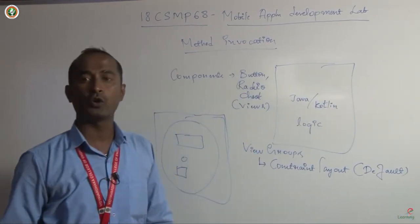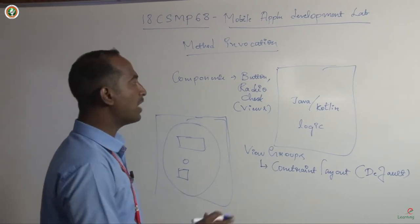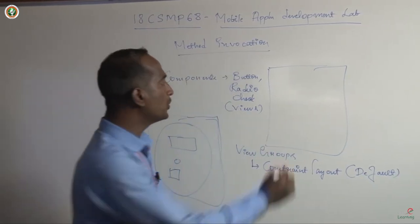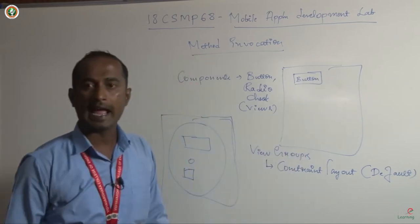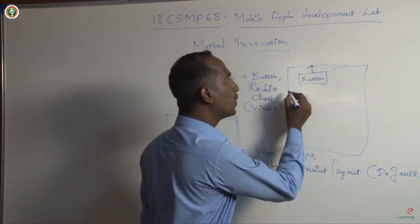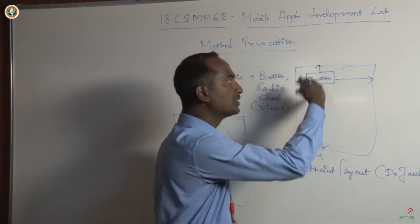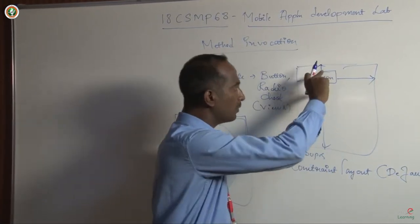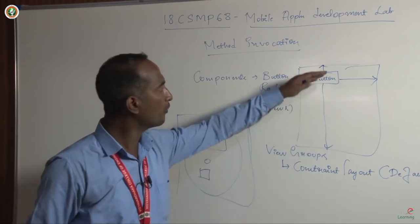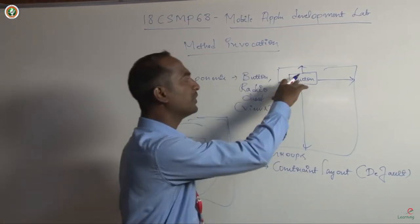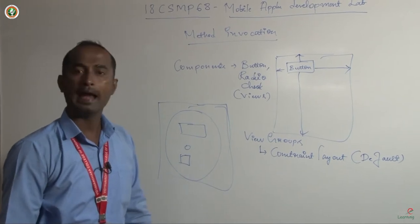The constraint layout means this is an activity where you add a button to your design. If you are using constraint layout, you have to set the constraint towards the top, bottom, left, and right. Based on those constraints, you set the position of the button. In constraint layout, you drag and drop the component and set constraints on all four sides.